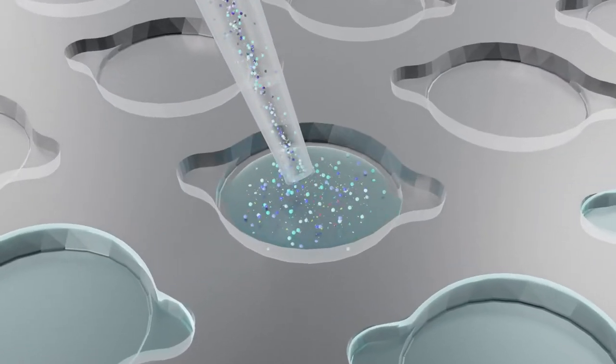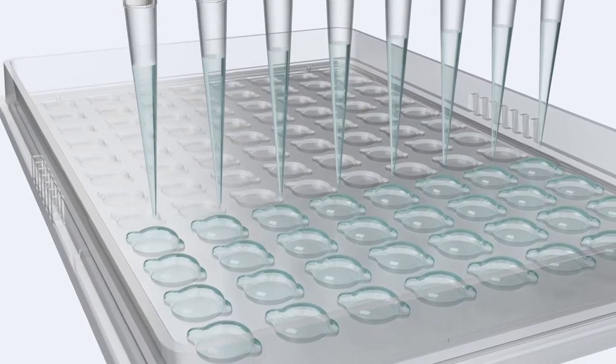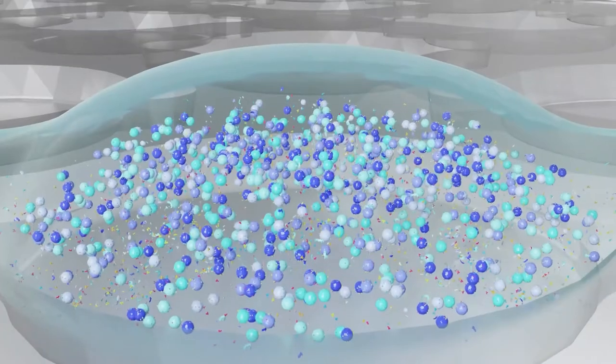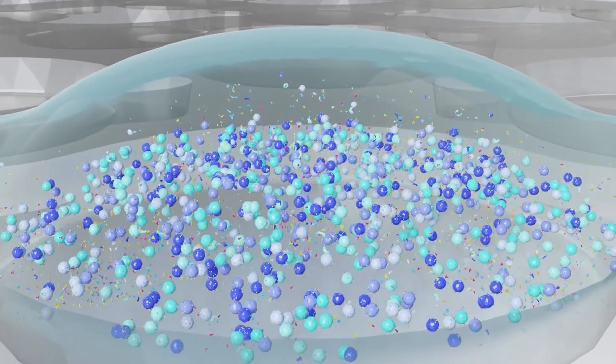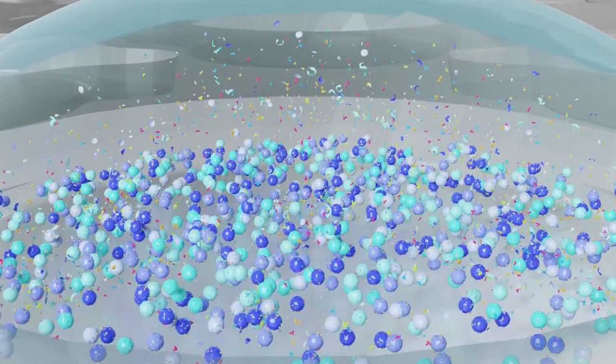Samples ranging from a single cell up to approximately 10 million cells in a buffer are dispensed onto the plate using manual or automated pipetting systems. Gravity then causes the cells to fall to the bottom of the wells where they settle gently on the hydrophilic coating without any physical attachment.